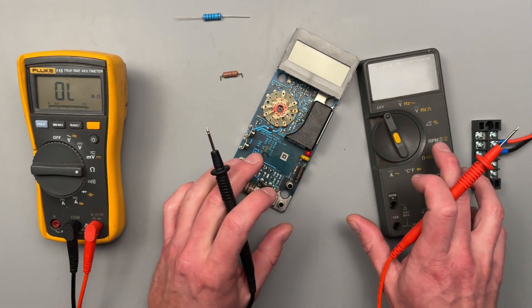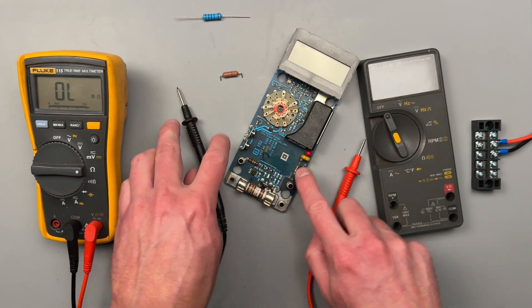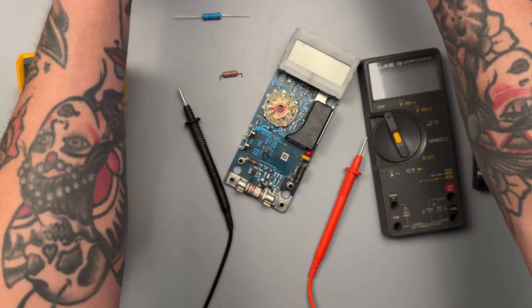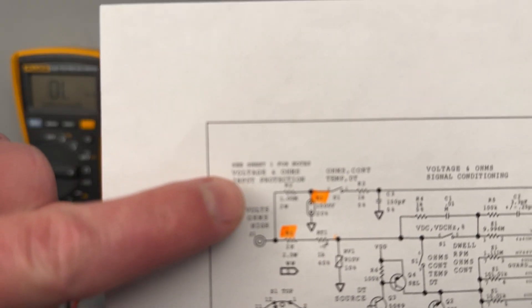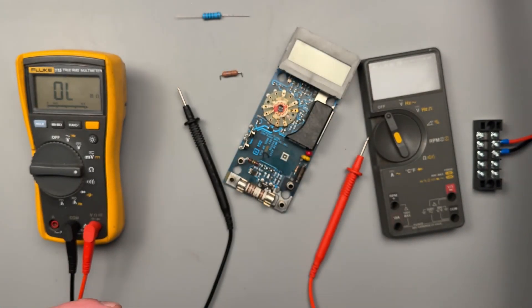So that's coming in at one mega ohm, that resistor. And we can see on our schematic that is R2, one mega ohm, two watt.